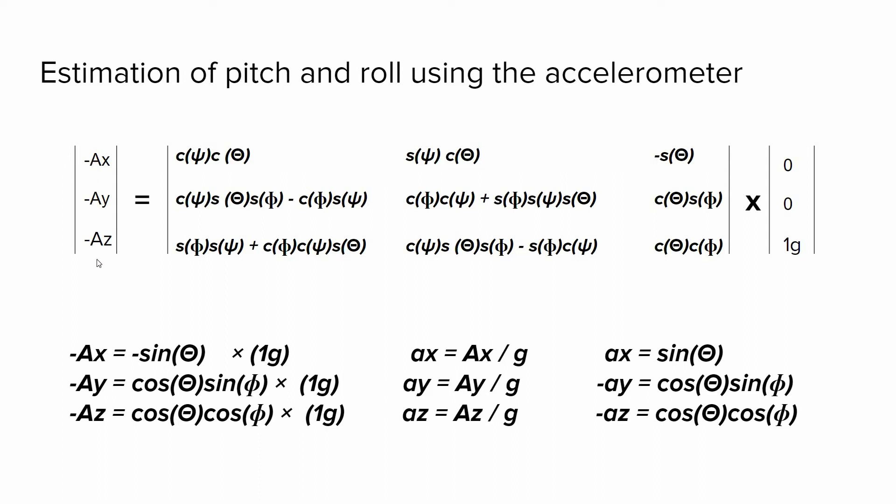If we write equations for each axis, we get these three equations. Next, we can normalize the accelerometer readings with respect to the gravity. So we have lowercase ax, ay, and az. Using these expressions, we can substitute and get these three really important equations.